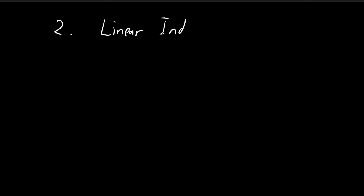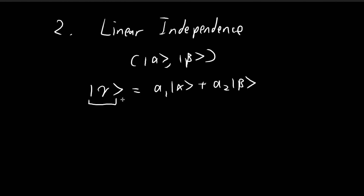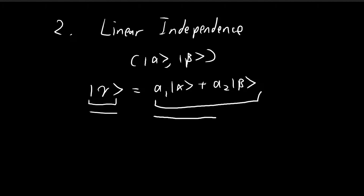The second concept you need to know is linear independence. If I have two vectors — alpha and beta — and a third vector gamma, and gamma can be expressed as a linear combination of alpha and beta, we will say that gamma is linearly dependent on alpha and beta. If gamma cannot be expressed as a linear combination of alpha and beta, we will say gamma is linearly independent of alpha and beta.